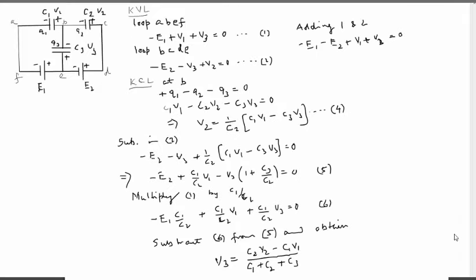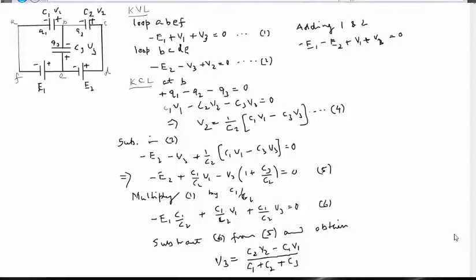Now we have taken a specific problem on which I will apply Kirchhoff's law in order to see how these rules can be applied. Look at the figure. The circuit contains three capacitances, C1, C2 and C3, and there are two voltage sources, E1 and E2. We have to find what is the charge Q3 on capacitor C3.